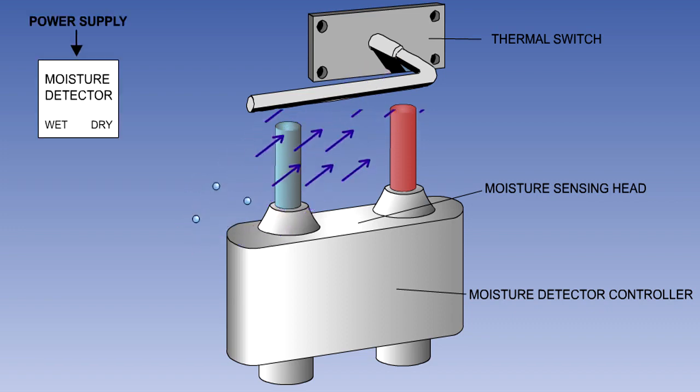The moisture detector controller is situated in the base of the unit, and senses the temperature difference between the wet and dry sensing bulbs. When the temperature difference reaches a predetermined value, it will send an icing conditions signal.